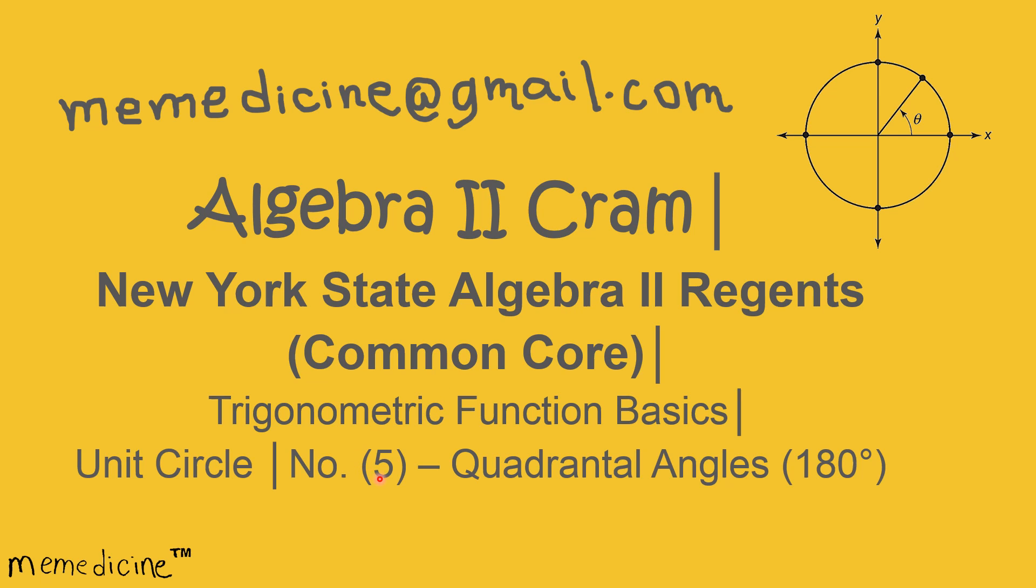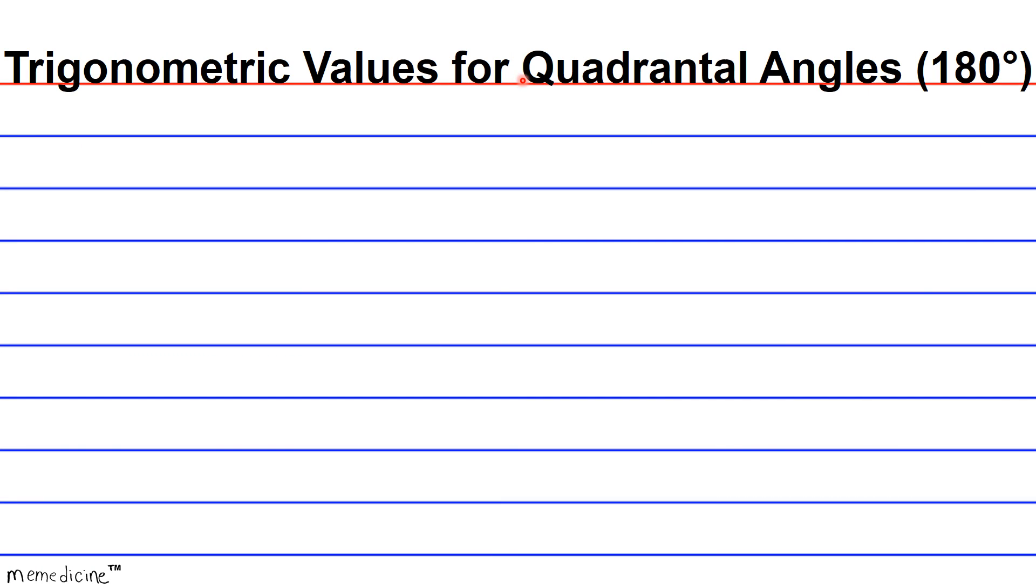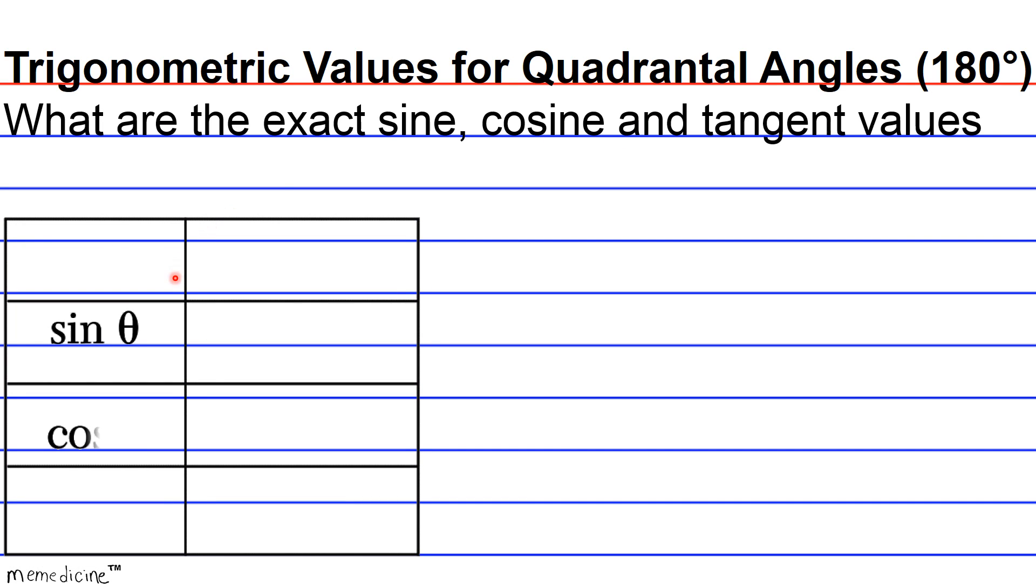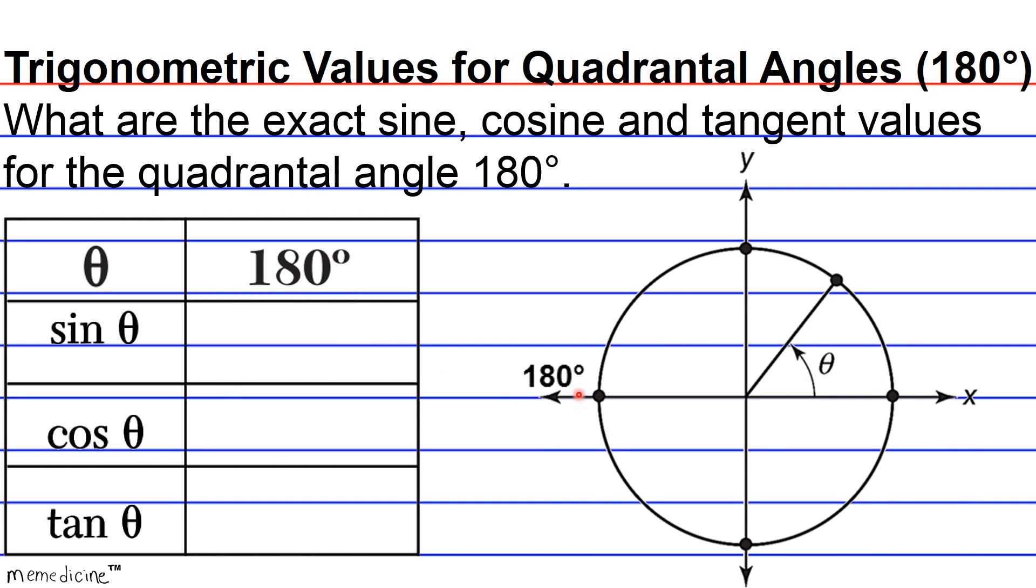Let's delve into the concept of the unit circle and the quadrantal angle 180 degrees. What are the exact sine, cosine, and tangent values for the quadrantal angle 180 degrees? Definitely press pause if you need to, and I'll give you a moment to think. While you're coming up with your solution, in case you forgot, a quadrantal angle is an angle whose terminal side is on the x- or y-axis in any direction.